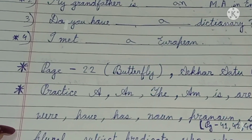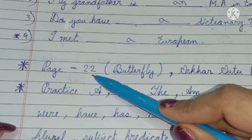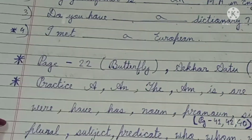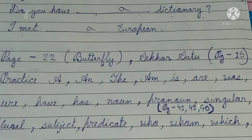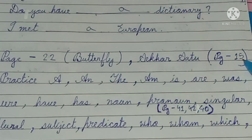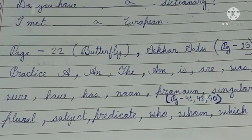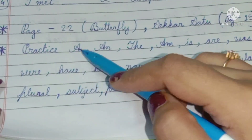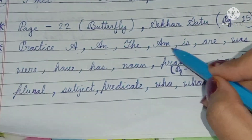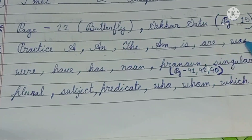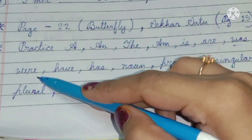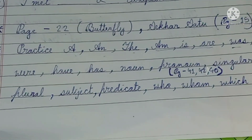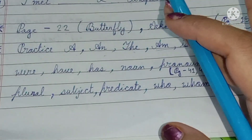We practice page number 22, and the second butterfly is page number 15. We practice 'a' and 'the' — and also 'was', the best way to practice.